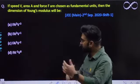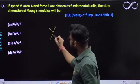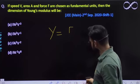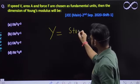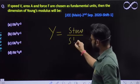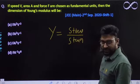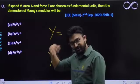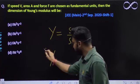Sabse pehle, isme aap kya visualization kar sakte hai - we already know Young's modulus is nothing but force, or you can say it is defined as a ratio of stress per unit strain, which is longitudinal stress by longitudinal strain. Isko agar aap dimensionally solve karte ho, toh dimension of Young's modulus lenge aap yaha pe.